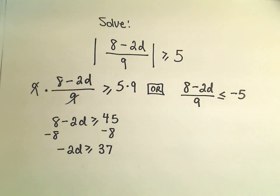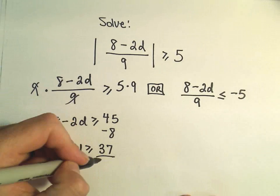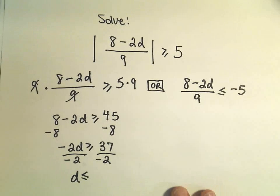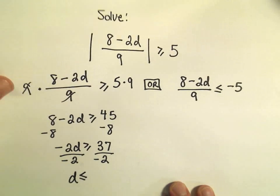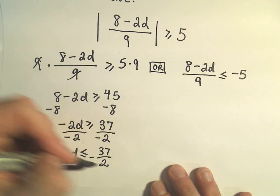I believe that's going to give us a positive 37. And now we can divide both sides by negative 2. Remembering that we have to flip the inequality because we've divided by a negative number. So we'll have negative 37 over 2.